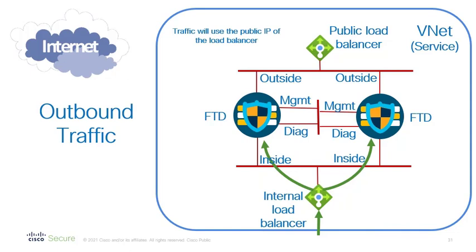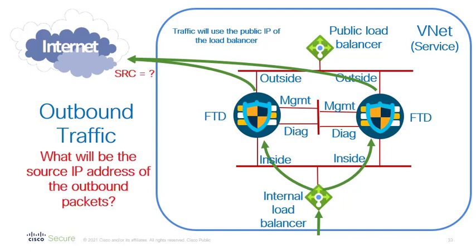For outbound traffic, the situation is similar but a bit easier. The traffic hits the internal load balancer, goes to the firewall, and from the firewall goes to the internet. The one unanswered question is: what would be the source address? It turns out this is a bit complicated.